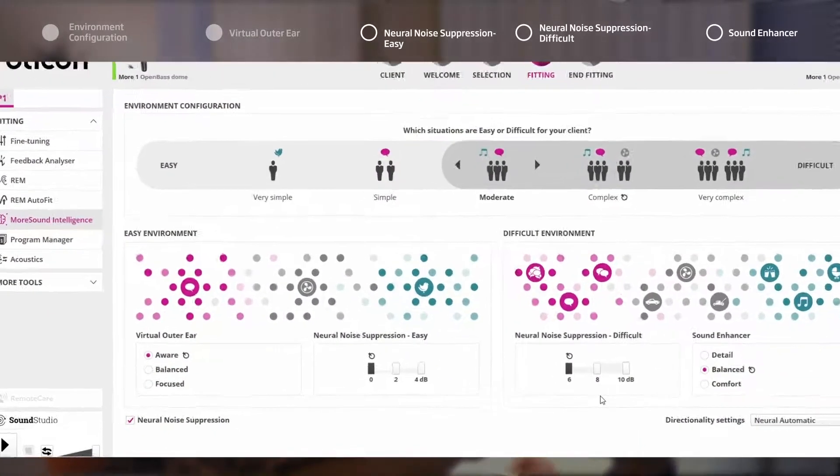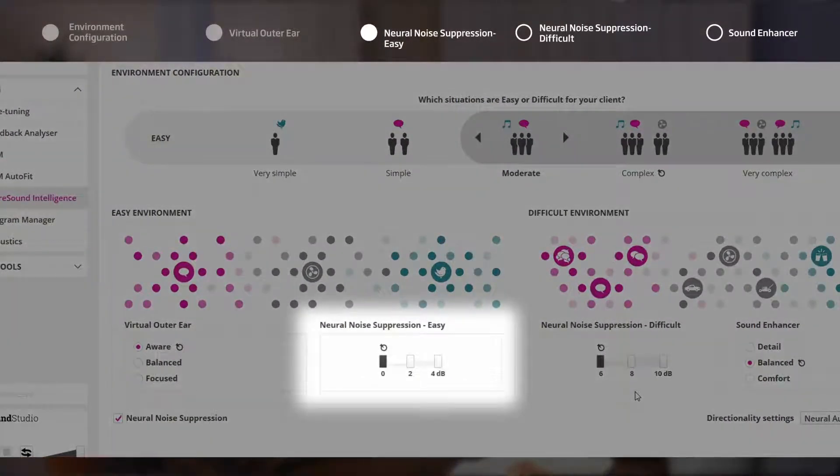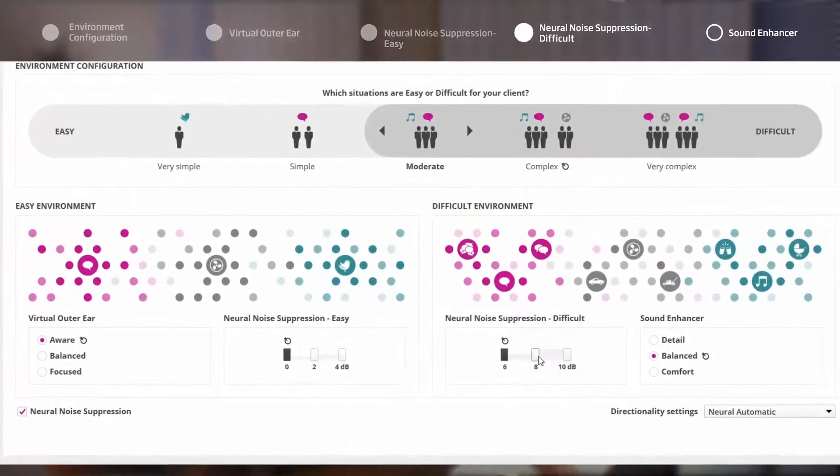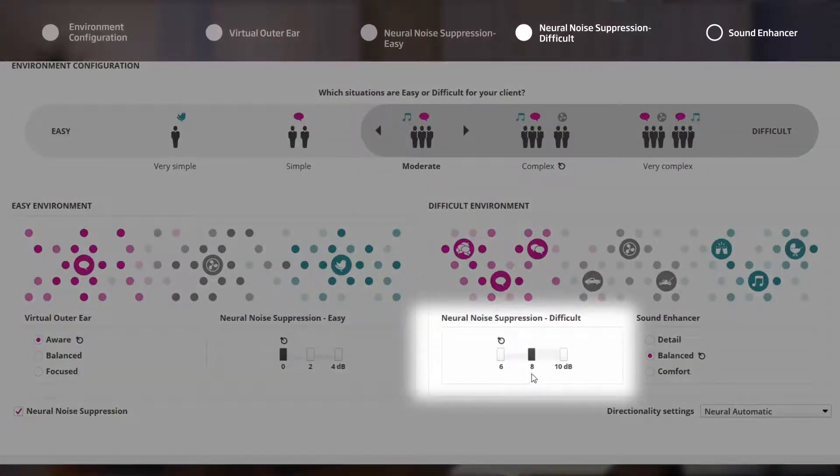No alteration has been made for Neural Noise Suppression in easy settings. Neural Noise Suppression for difficult has now been set at eight decibels. Now the noise suppression will activate at an earlier stage due to the change in Environment Configuration, meaning that it will take less noise for the system to start helping the user. In difficult environments, the user will now have eight instead of six decibels of noise suppression.